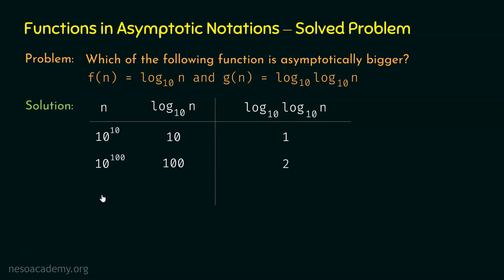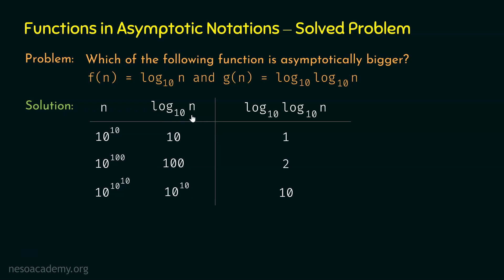What if we take n as 10 to the power 10 to the power 10? Log(10 to the power 10 to the power 10) base 10 is equal to 10 to the power 10. We know log n base 10 is 10 to the power 10, so we can replace this by 10 to the power 10. And log(10 to the power 10) base 10 is 10. We can see the growth rate of log(log n base 10) base 10 is slower compared to log n base 10. So clearly, f(n) is asymptotically bigger than g(n).